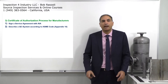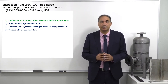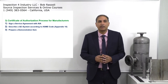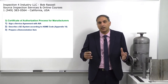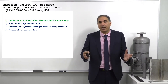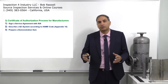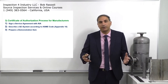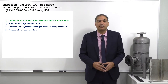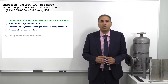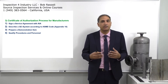The third item in the process for becoming an authorized pressure vessel manufacturer is to prepare a demonstration item. The manufacturer puts together a design, then manufactures a pressure vessel, and shows ASME and the Authorized Inspection Agency that they have designed, manufactured, inspected, and tested a demo pressure vessel based on the ASME code.